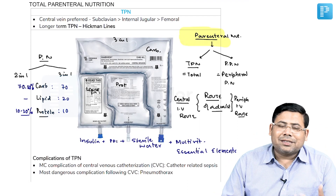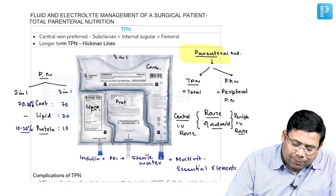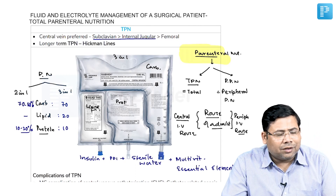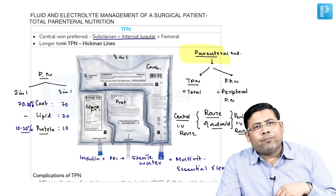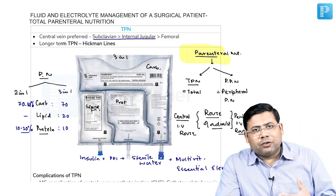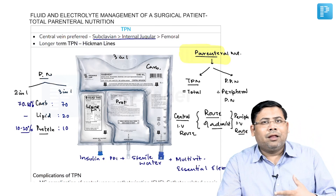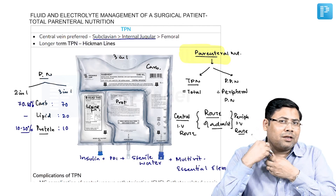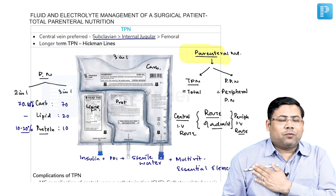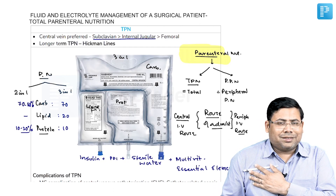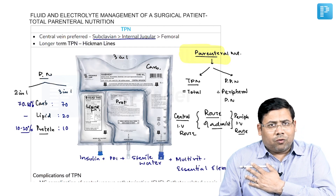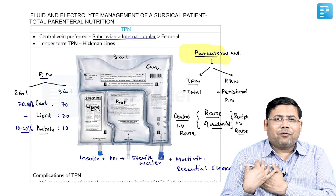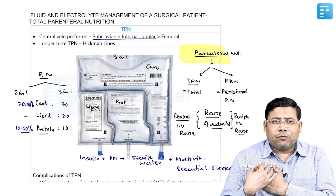For central line access, the subclavian route is preferred. Although an internal jugular line is easier to insert and can be done single-handedly, it is not preferred for nutrition because the line hangs from the neck. When the line is firmly placed over the chest wall, it becomes easier and more convenient, improving the ergonomics of the patient.